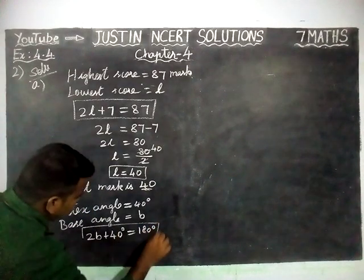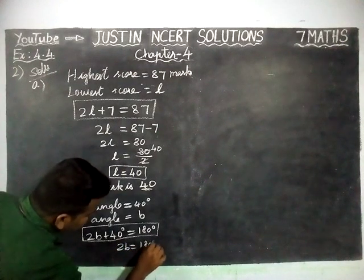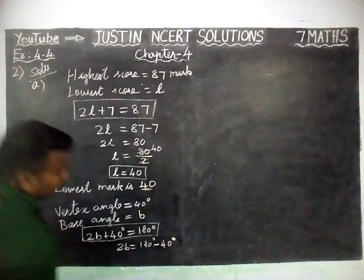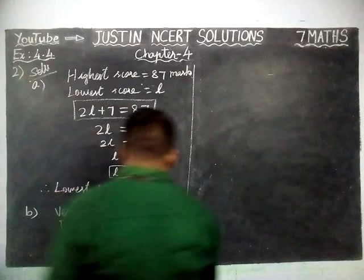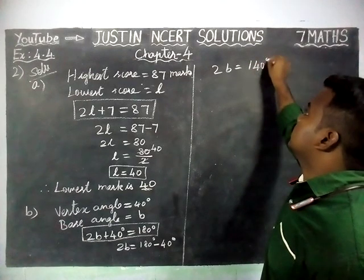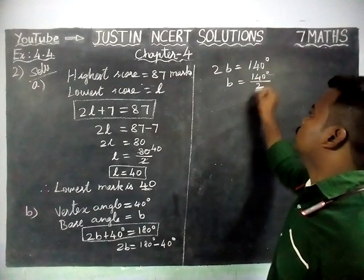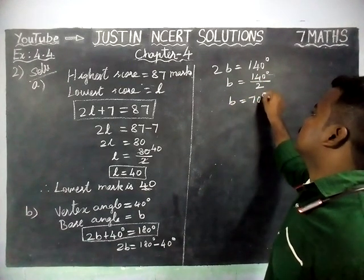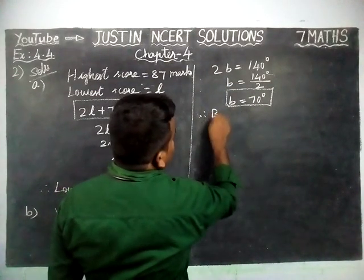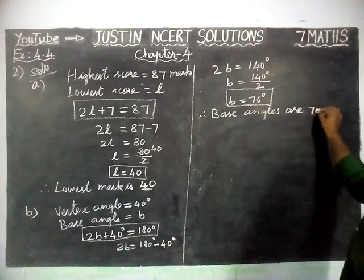By using this equation, we are going to find the answer. 2B is equal to 180 degrees minus 40 degrees. 2B equals 180 minus 40, which equals 140 degrees. B is equal to 140 degrees divided by 2. B is equal to 70 degrees. Therefore, the base angles are 70 degrees.